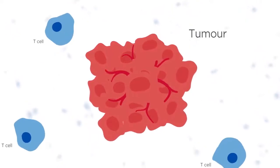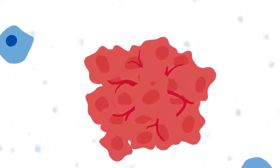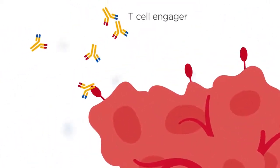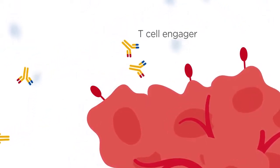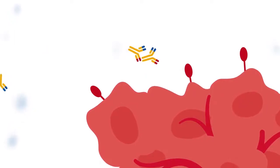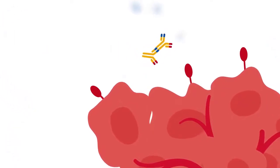Tumours are able to grow unchecked by evading the immune system. A T-cell engager can be used to alert the immune system to a tumour's presence, allowing cytotoxic T-cells to recognise and kill the tumour cells.